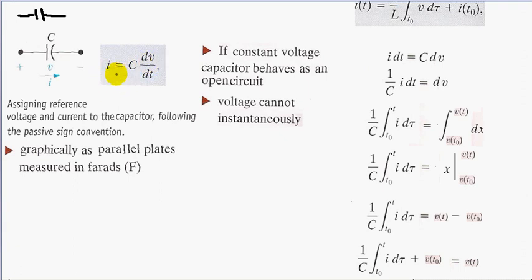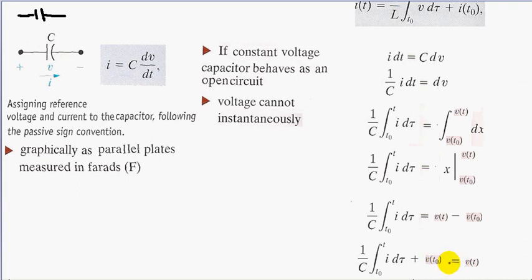Now we can find the voltage relationship in a capacitor. If we multiply both sides by dt, divide by C, and then integrate both sides as we did with the inductor — the integral of dx is x. We take our upper limit subtracted by our lower limit, then add both sides by our lower limit. We have our voltage relationship: V(t) equals (1/C) times the integral from the initial time to the final time of i dτ, plus V(t₀).